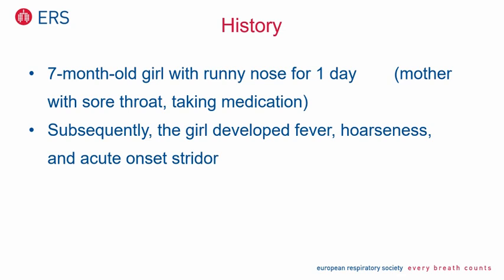Next case: a seven-month-old girl, runny nose for one day. The mother was ill with a sore throat — clearly a viral respiratory tract infection in the family. The girl also developed fever, hoarseness, and stridor. The diagnosis with this clinical picture? It's definitely croup. The age of the child is okay — seven months.